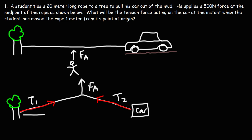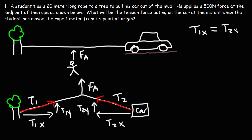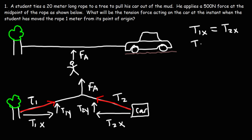T1 is going to have a horizontal component and a vertical component: T1x and T1y. T2 is also going to have similar components: T2x and T2y. Because the student is applying the force at the midpoint of the rope, T1x and T2x will be equal to each other. And because of the symmetry of this problem, T1y and T2y will also be equal to each other.